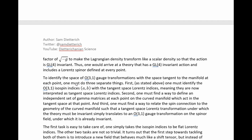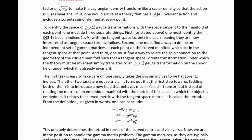To identify the space of O(3,1) gauge transformations with the space tangent to the manifold at each point, one must do three separate things. First, one must identify the O(3,1) isospin indices with the tangent space Lorentz vector indices, meaning they are now interpreted as tangent space Lorentz indices. Second, one must find a way to define an independent set of gamma matrices at each point on the curved manifold which act in the tangent space at that point. Third, one must find a way to relate the spin connection to the geometry of the curved manifold such that a tangent space Lorentz transformation simply translates to an O(3,1) gauge transformation on the spinor field. The first task is easy — one simply takes the isospin indices to be flat Lorentz vector indices. The other two tasks are not so trivial.